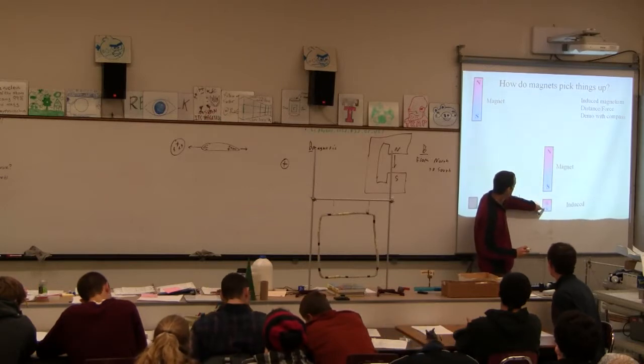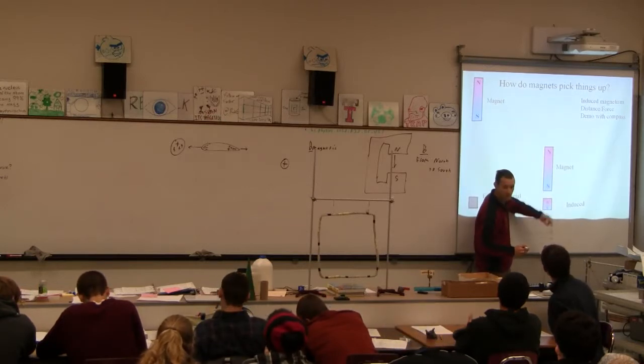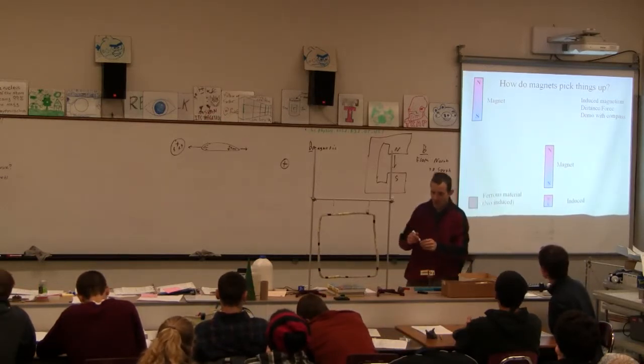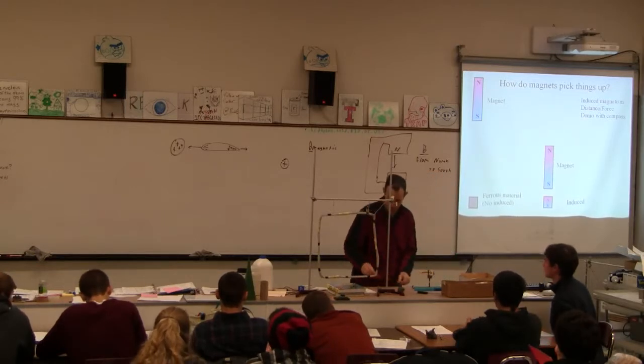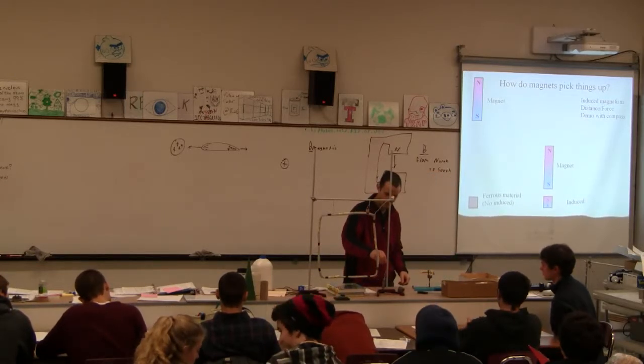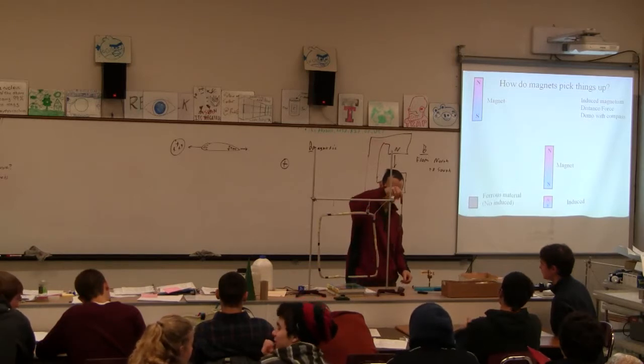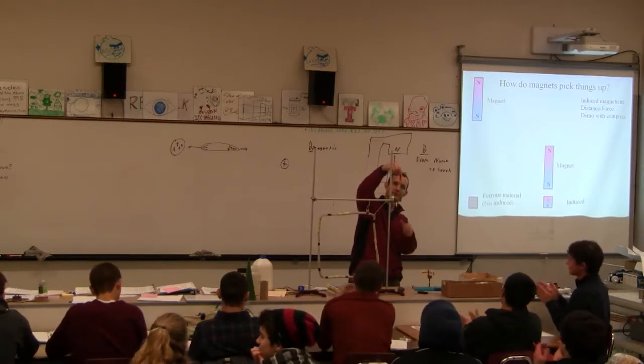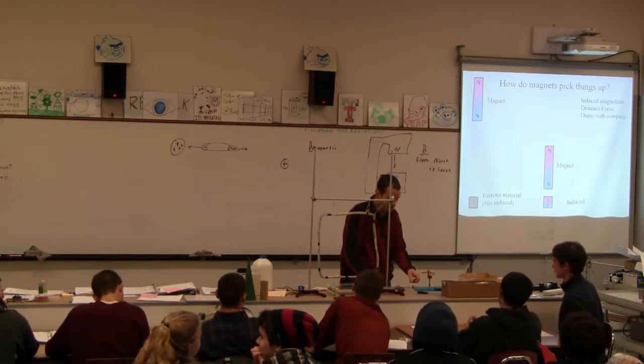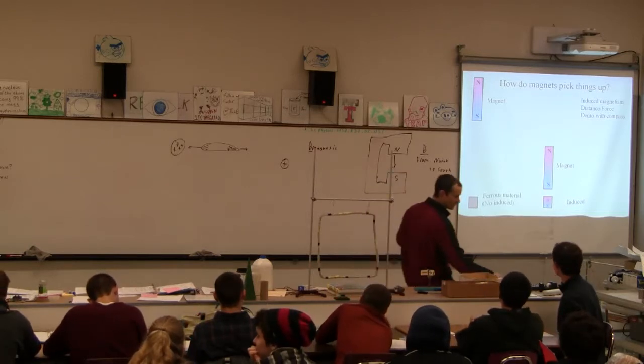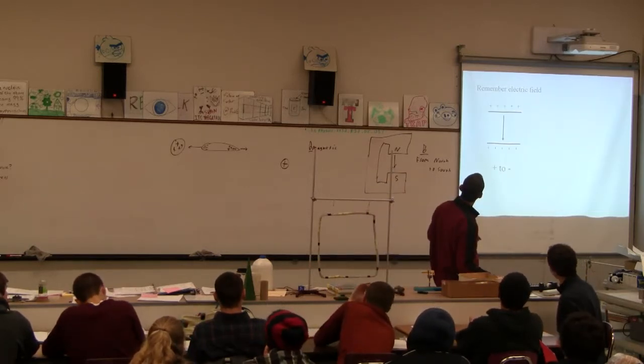So this force of repulsion is weaker than this force of attraction, and therefore magnets are able to pick up pieces of metal-ish. A little applause. Well, that was easy applause to get. There we go.